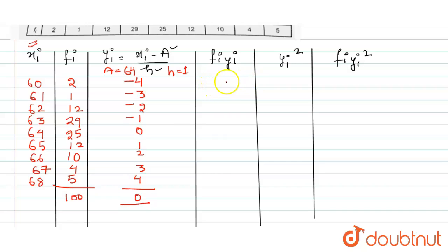So minus 8, minus 3, minus 24, minus 29, 0, and next is 12, 20, 12, 20. So if we add this, the sum will come out to be 0.